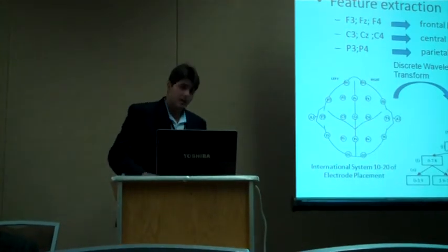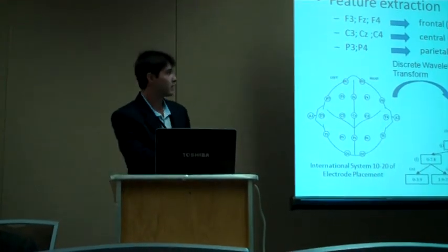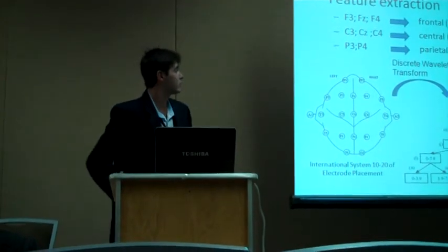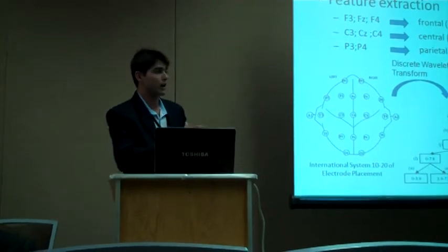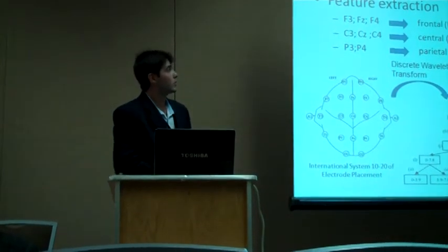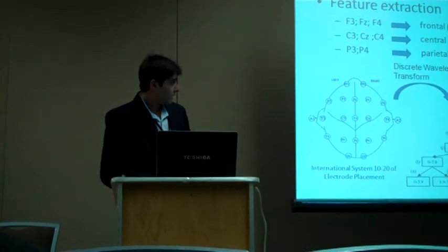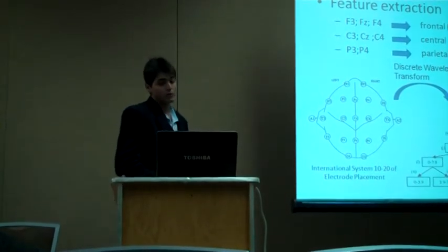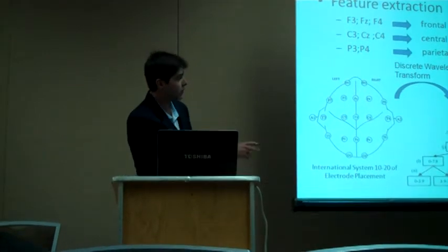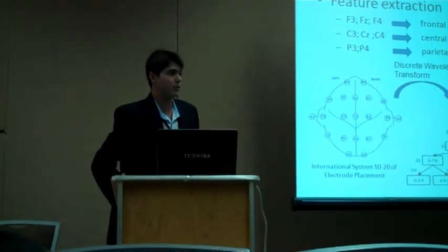At this point, a feature extraction is made by placing 8 electrodes at the frontal, central, and parietal locations of the scalp that are related to the motor and pre-motor cortex area of the brain. And these 8 signals are then decomposed through a discrete wavelength transform until achieving the principal frequency of the brain waves.